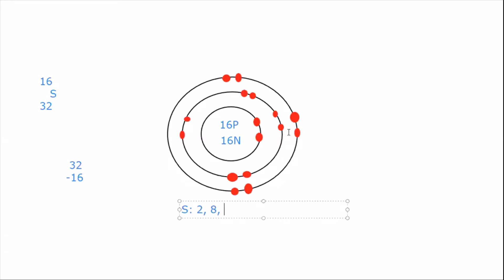So we write the eight, and now we're on to the electrons in our third shell. We need another comma to show we're now talking about a different shell, and we have six electrons in the outer shell. So when we write our electron arrangement, we have the symbol for the atom, then we have how many electrons in the first shell — the shell closest to the nucleus — and then we work our way out so that our valence electrons are the last ones written. We place a comma between each number to show that it's a different shell.